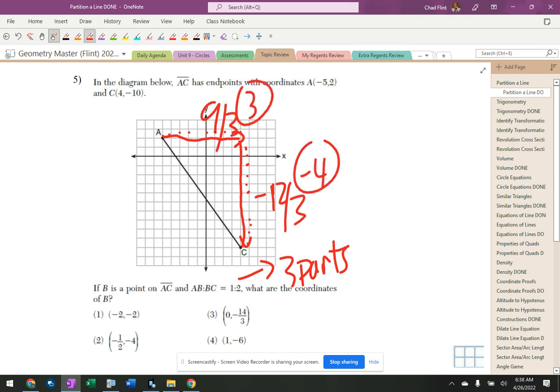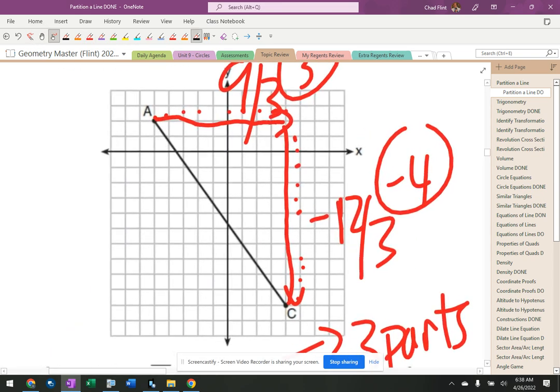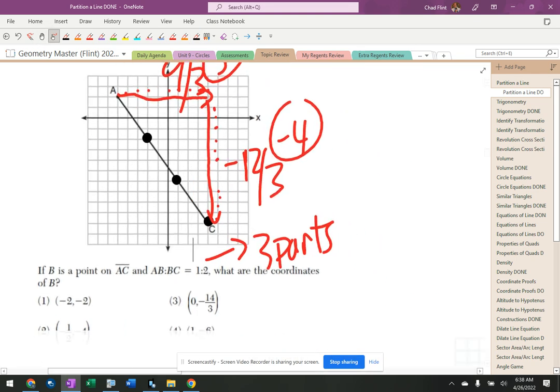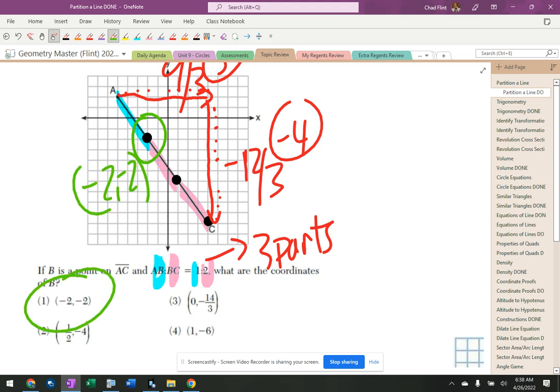Okay so, one two three, one two... [marking the segments]... BC is 2, AB is 1, BC is 2 right there. Negative 2, negative 2, that's the answer.